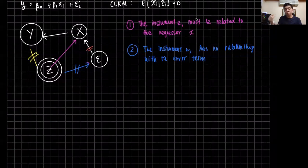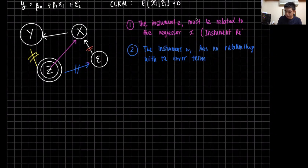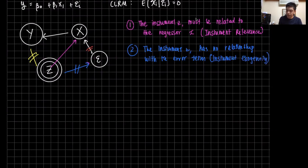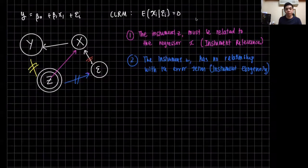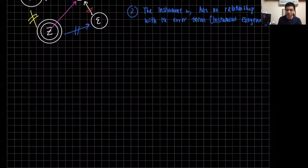Let's be more formal about these two properties. The first property is what we refer to as instrument relevance. The second property is what we refer to as instrument exogeneity. So that's instrument relevance and instrument exogeneity.